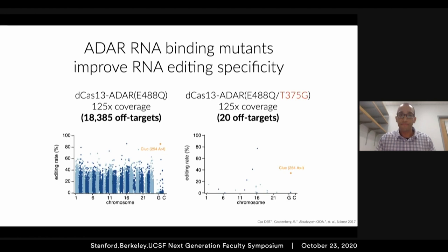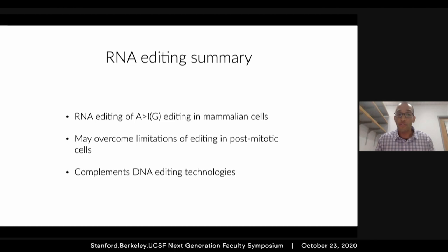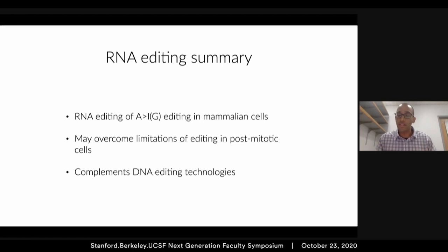What I hope I've convinced you of today is that we developed a way to do programmable RNA editing of adenosine to inosine — treated by cells as guanosine — in mammalian cells, which you could use to reverse G-to-A mutations. This may overcome the limitations of editing in post-mitotic cells, which was our original rationale. There's some unpublished data to that effect. Overall this will complement many DNA editing technologies, and Cas13b could also be used to recruit other RNA-modifying domains to transcripts inside mammalian cells to investigate their function or for therapeutic purposes.